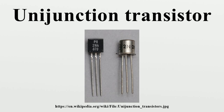Unijunction transistor circuits were popular in hobbyist electronics circuits in the 1960s and 1970s because they allowed simple oscillators to be built using just one active device. For example, they were used for relaxation oscillators in variable-rate strobe lights.